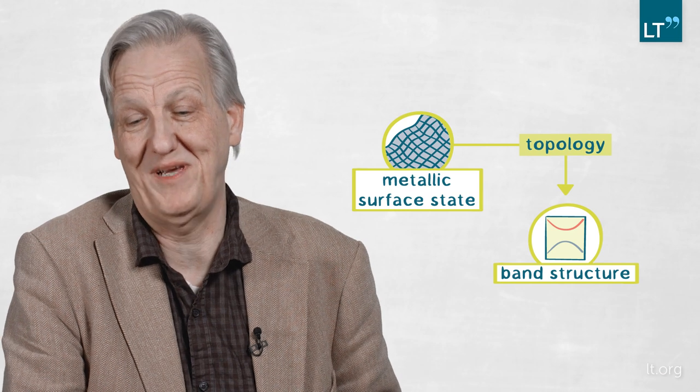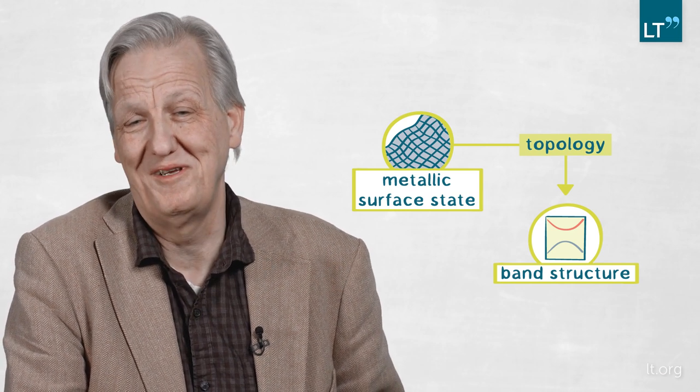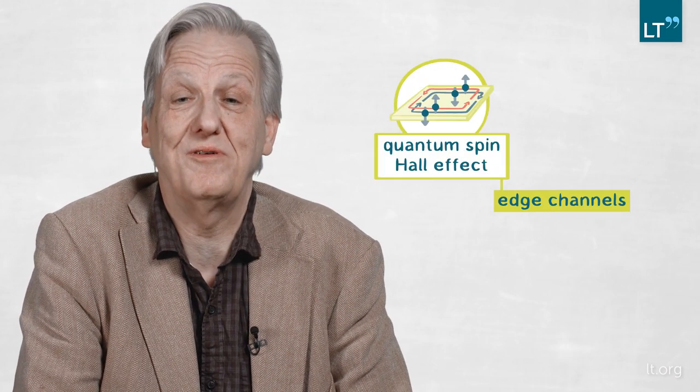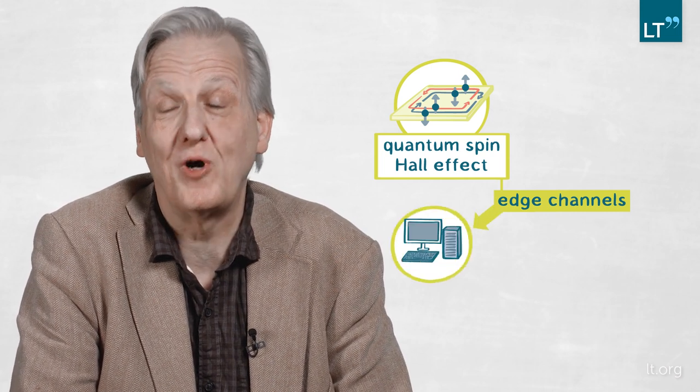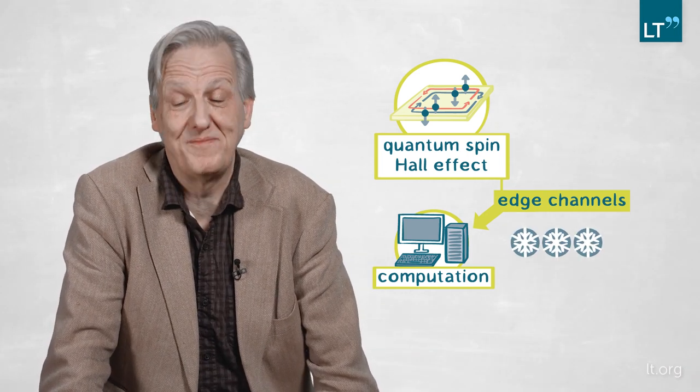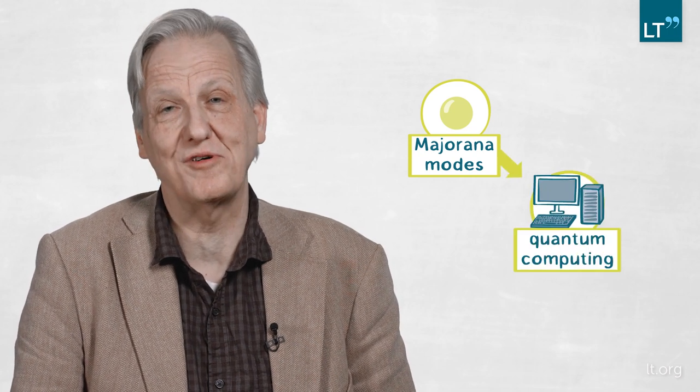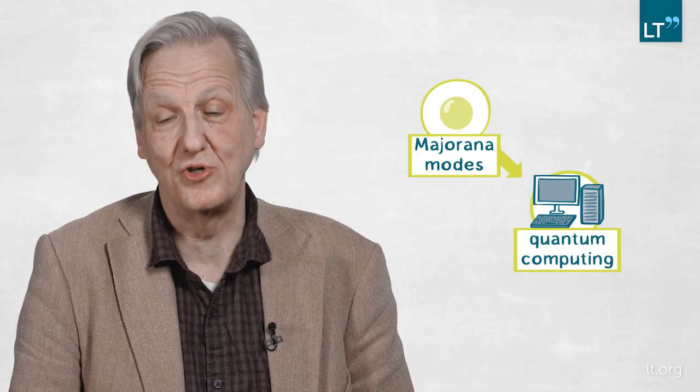The important discovery really was that band structures can have topological properties, and that they lead to totally new physics in these materials. There are also maybe applications, but that's secondary. The applications could be that the edge channels we saw in the two-dimensional quantum spin Hall effect could give you very low power possibilities for computation, but you have to get the effect at room temperature, and that's not so easy. The other thing is that these Majorana modes in topological superconductivity could be used to try topological quantum computing, which some people see as a very promising road. But these are things that still have to be demonstrated, and we have to see how far all this develops.